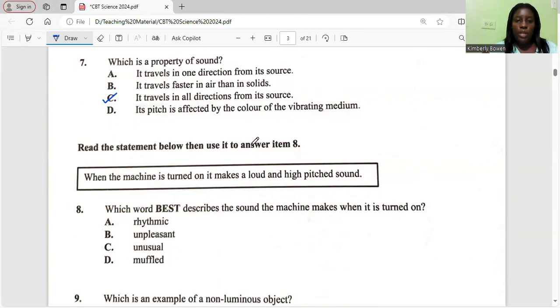Read the statement below then use it to answer item 8. When the machine is turned on it makes a loud and high pitched sound. Which word best describes the sound the machine makes when it's turned on? Rhythmic, unpleasant, unusual, or muffled. The answer is unpleasant. If it's loud and high pitched I can't see how that can be rhythmic. It's not unusual because we've heard things with that sound before and muffled it wouldn't be loud or high pitched.